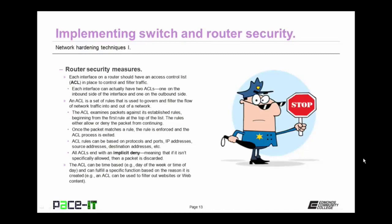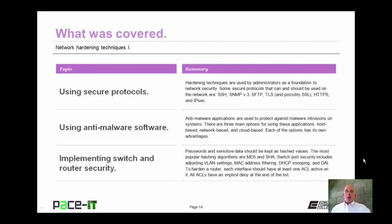The ACL can be time-based, as in day of the week or time of day, and it can fulfill a specific function based on the reason it is created — for instance, an ACL can be used to filter out websites or web content. That concludes this session on Network Hardening Techniques Part 1. I talked about using secure protocols, then we moved on to using anti-malware software, and we concluded with implementing switch and router security. On behalf of Pace IT, thank you for watching this session, and I hope to do another one soon.